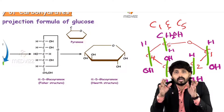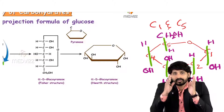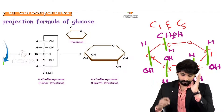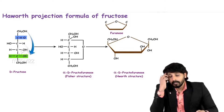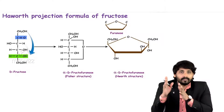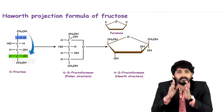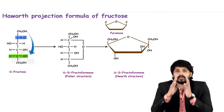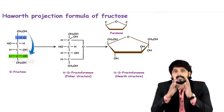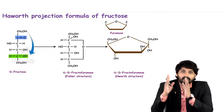This way we can convert Emil Fischer's straight chain of glucose into Haworth ring form — glucopyranose. Whenever there is a conversion of straight chain into ring form, the intermediate conformation is known as hemiacetal. The oxide linkage forming in glucose is known as hemiacetal, and the oxide linkage forming in fructose is known as hemiketal.